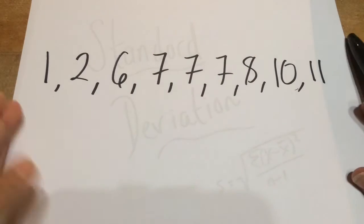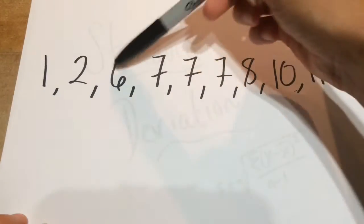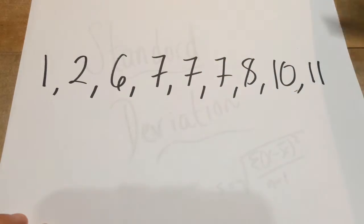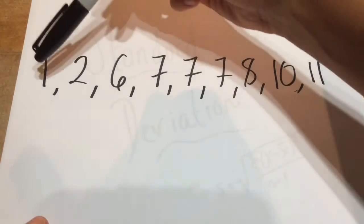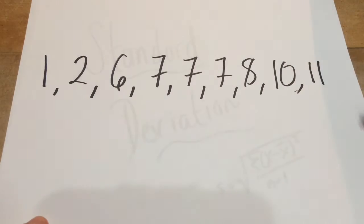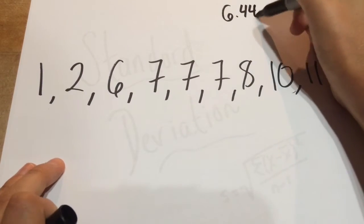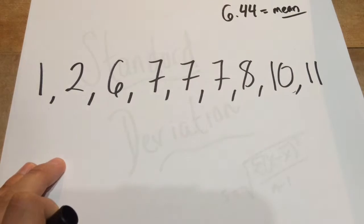So for example, here in this really simple data set, we would first define the mean. We would add all these numbers together, and then divide by how many numbers we added. So we would add all these together, divide by one through nine, and I believe we get about 6.44 when we do that. So 6.44 would be our mean in this case.